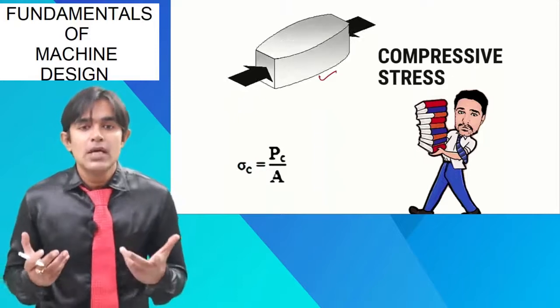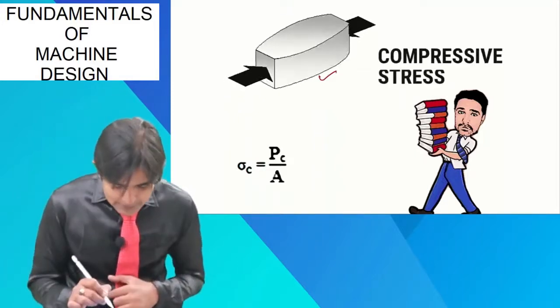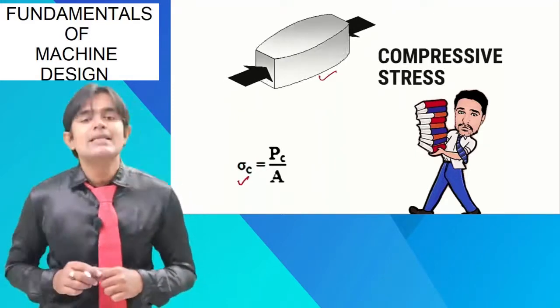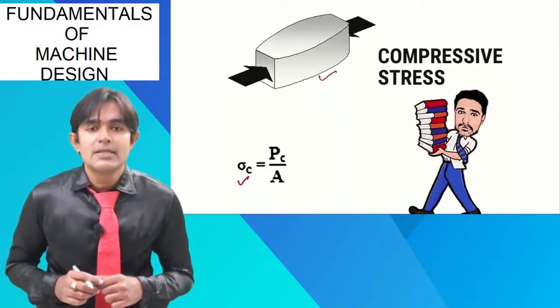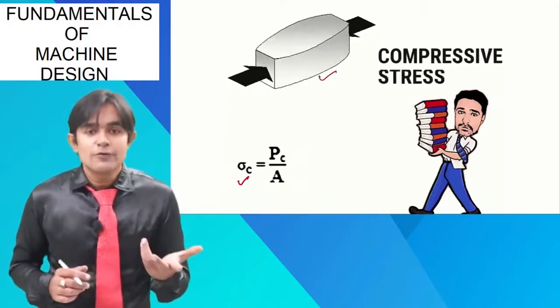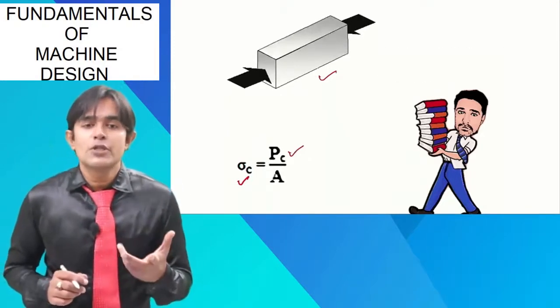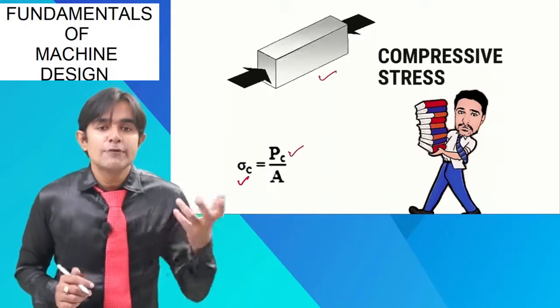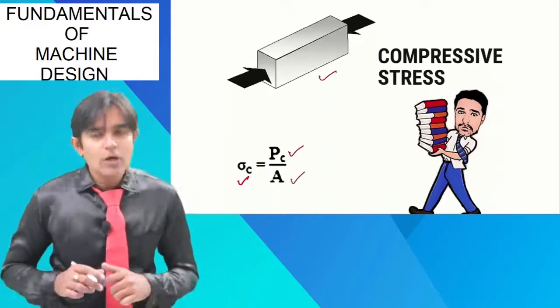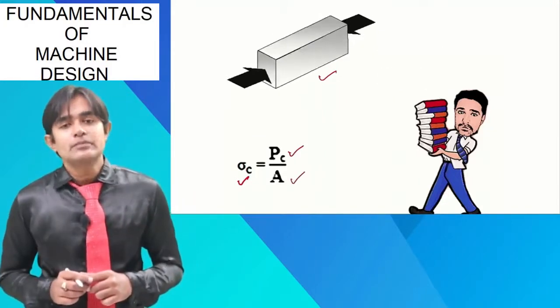If I want to mathematically denote the compressive stress, then it is by this way. Sigma C, C stands for compressive and sigma stands for compressive stress. PC, compressive force, C stands for compression and P is the force, so compressive force and A stands for cross-sectional area.